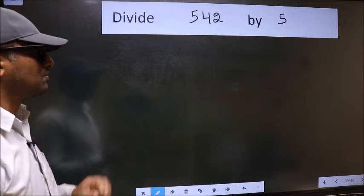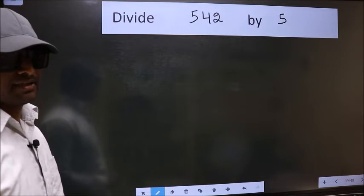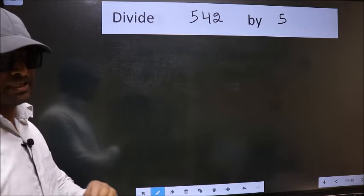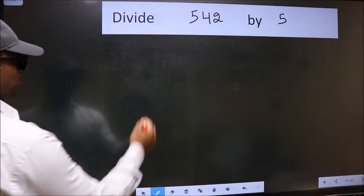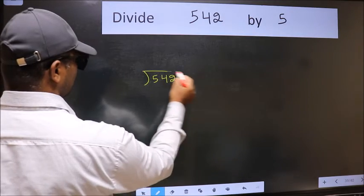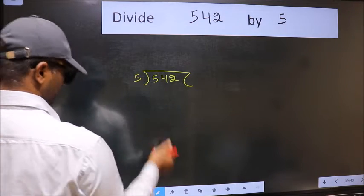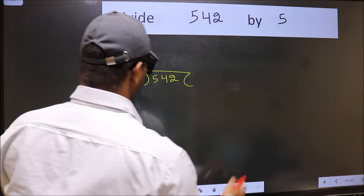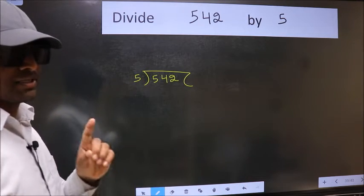Divide 542 by 5. To do this division, we should frame it in this way. 542 here and 5 here. This is your step 1.